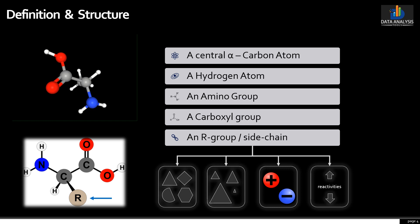In all amino acids other than glycine, the central carbon is a chiral carbon. The R groups have a variety of shapes, sizes, charges, and reactivities, and are responsible for their physical and chemical properties. The standard amino acids are therefore classified on the basis of these R groups.